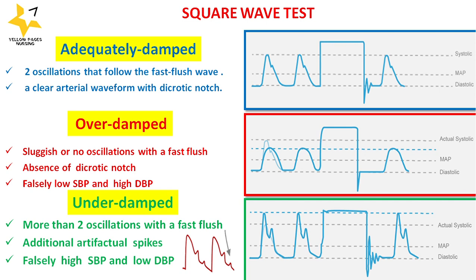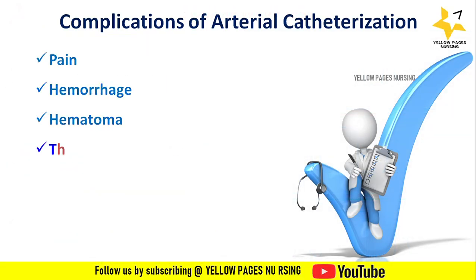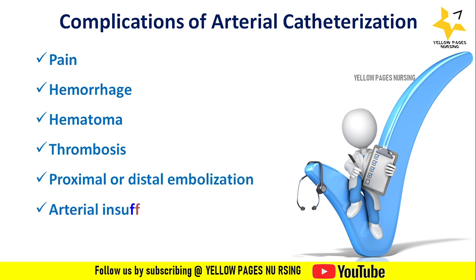In case of over-damped or under-damped results, check the tubing for bubbles, blood clots, kinks, and loose connections, or decrease the length of tubing. Complications of arterial catheterization include pain, hemorrhage, hematoma, thrombosis, proximal or distal embolization, arterial insufficiency, and infection.